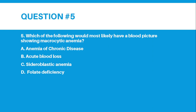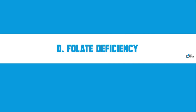Number 5: Which of the following would most likely have a blood picture showing macrocytic anemia? Letter A, Anemia of Chronic Disease. Letter B, Acute Blood Loss. Letter C, Sideroblastic Anemia. Letter D, Folate Deficiency. The correct answer for number 5 is Letter D, Folate Deficiency.